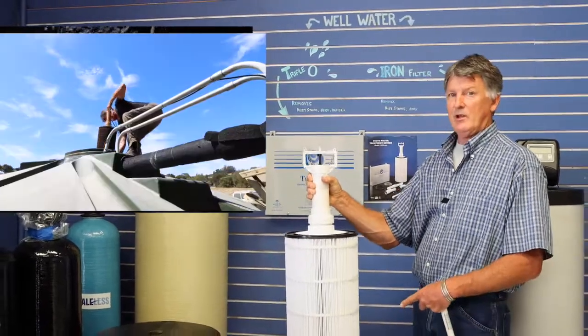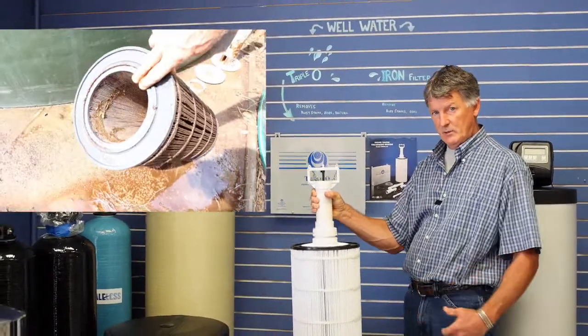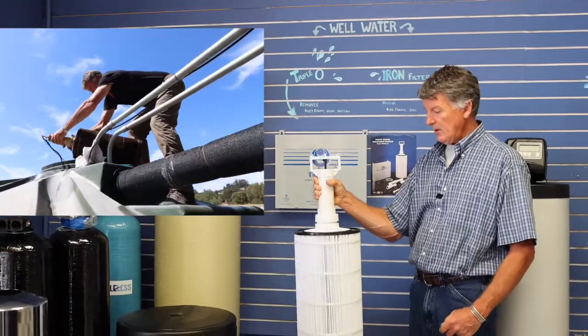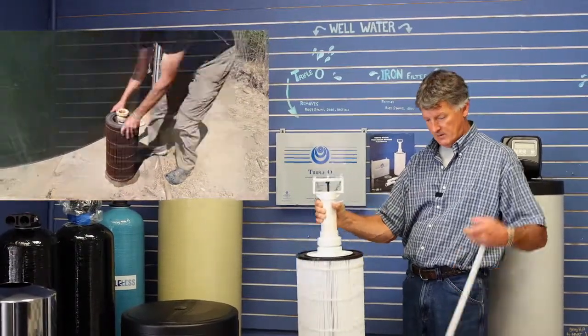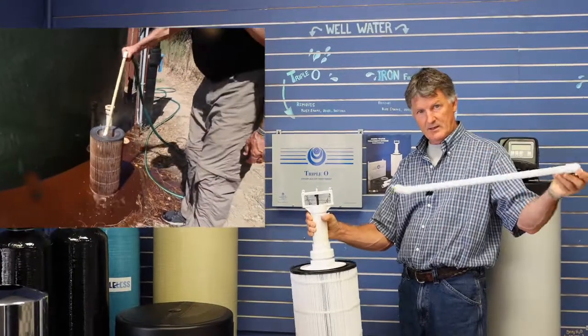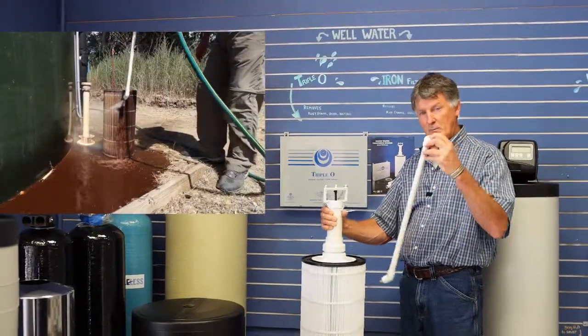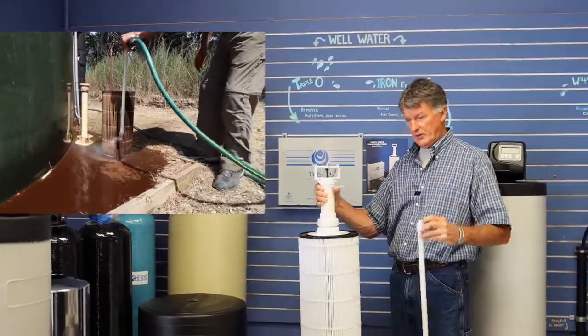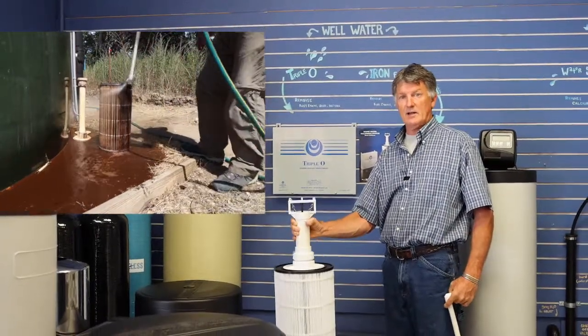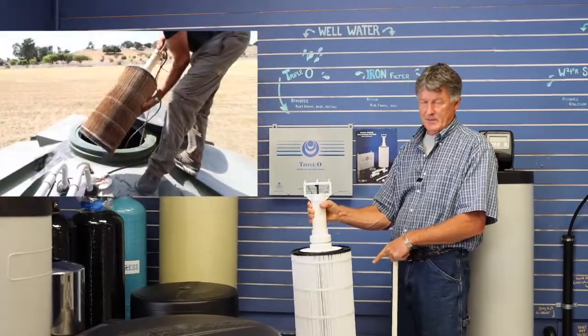The filter will collect the minerals that are being precipitated out of the water and periodically you'll lift this out of the tank, hose it off, get a cleaning wand with it, and you spray the minerals off the outside of the filter and put it back in the tank. The filter will last many years.